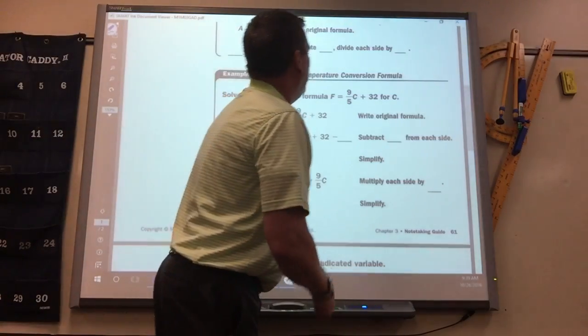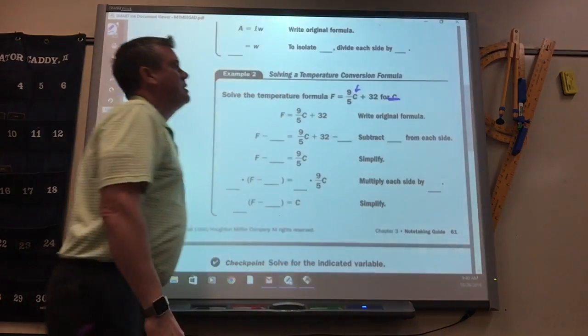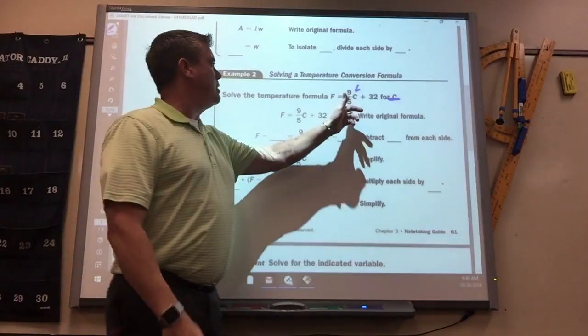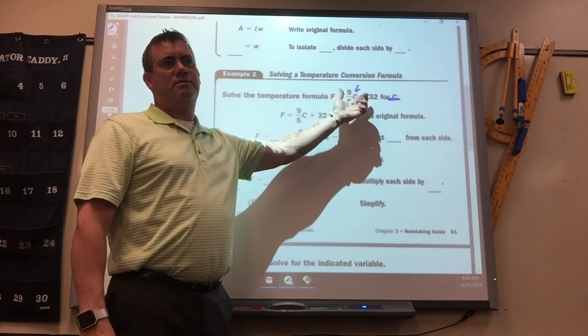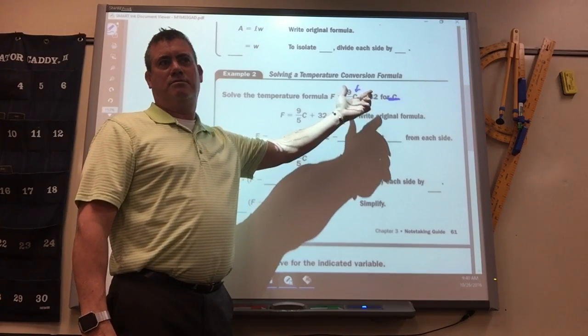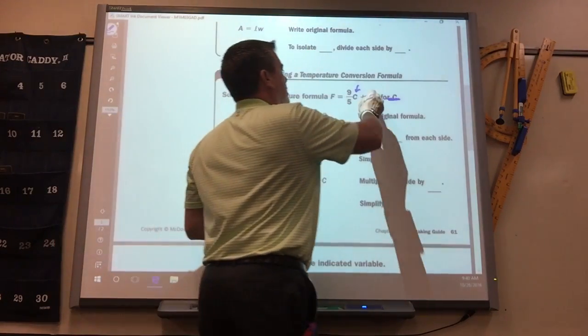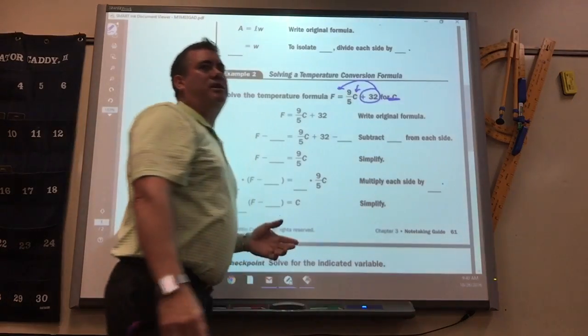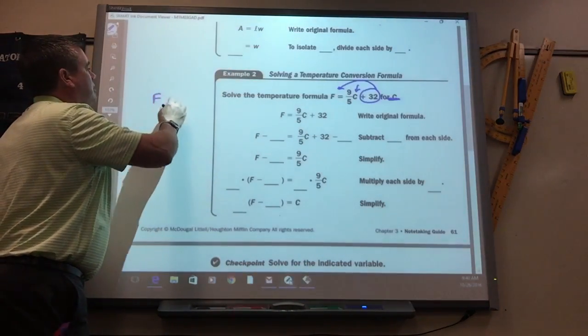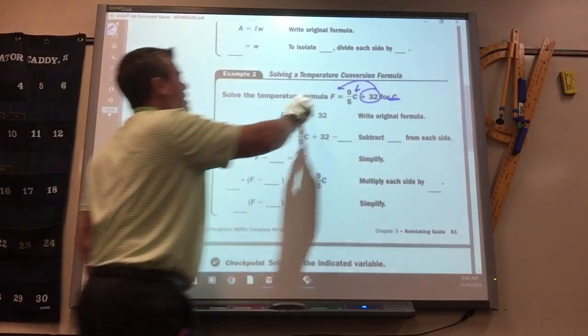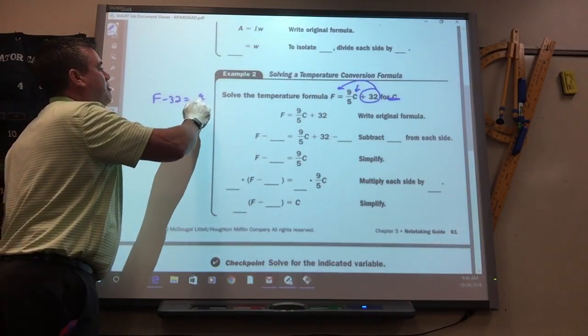So what they want you to do here is solve for C. So what do you got? We got to get rid of the 9 fifths and the 32. Which one do you move first? The 32. Anything not attached to it is what you move first. Since it's not attached, you just move it over and it changes signs. So the F I didn't move, that stays there. I move the plus 32 over, it changes to minus 32. Equals 9 fifths C.